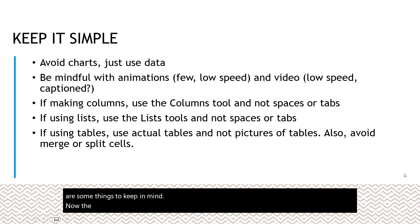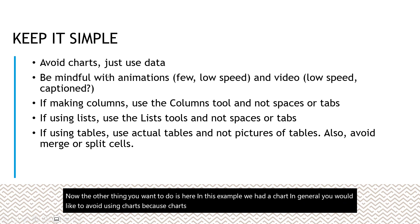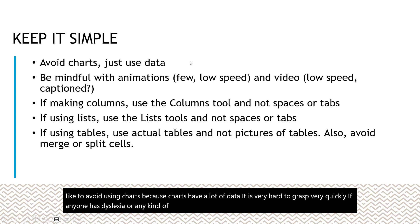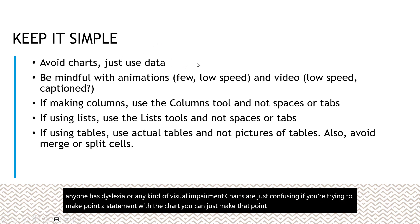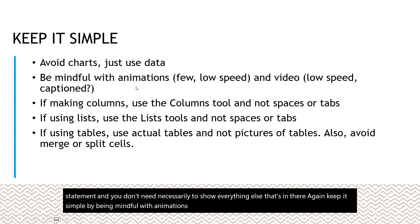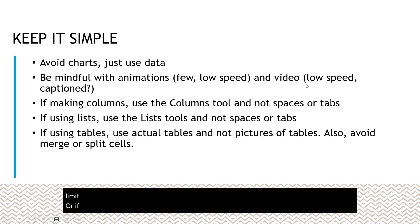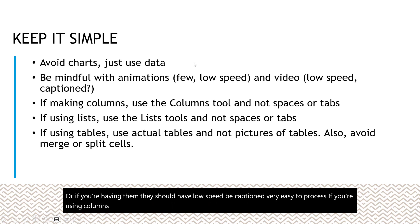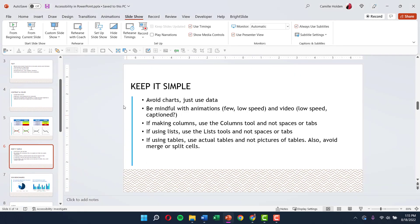In general, you would like to avoid using charts because charts have a lot of data and are very hard to grasp quickly, especially for anyone with dyslexia or a visual impairment. If you're trying to make a point with a chart, you can just state that point using the data — you don't necessarily need to show everything else. Also be mindful with animations and videos; limit them, or keep them at low speed and captioned. If you're using two columns of text, make sure you use the column tool and not spaces or tabs.